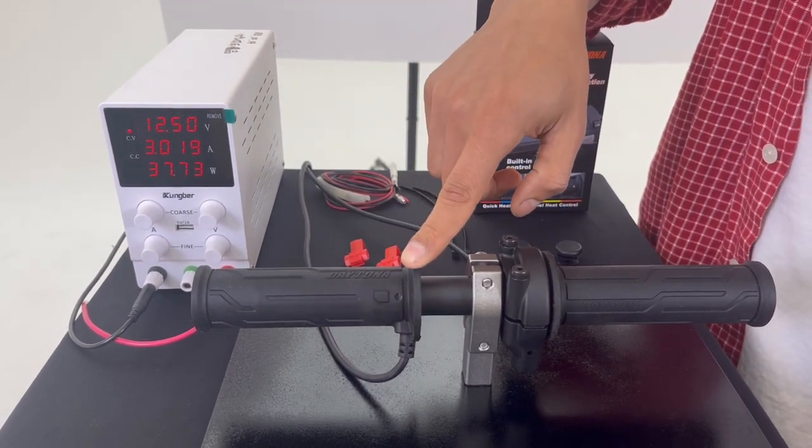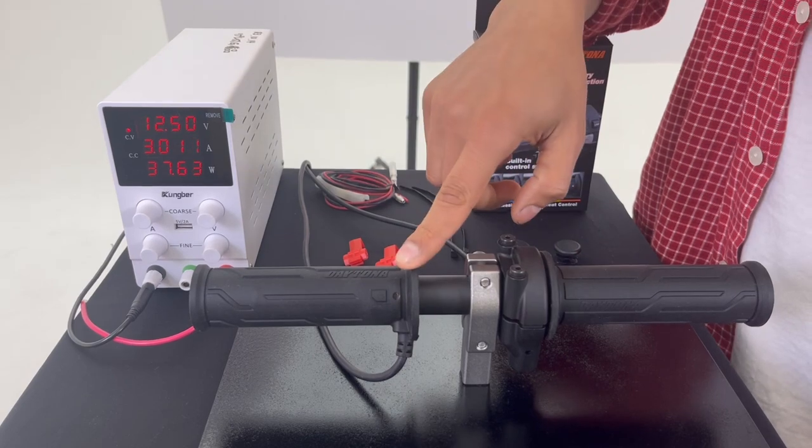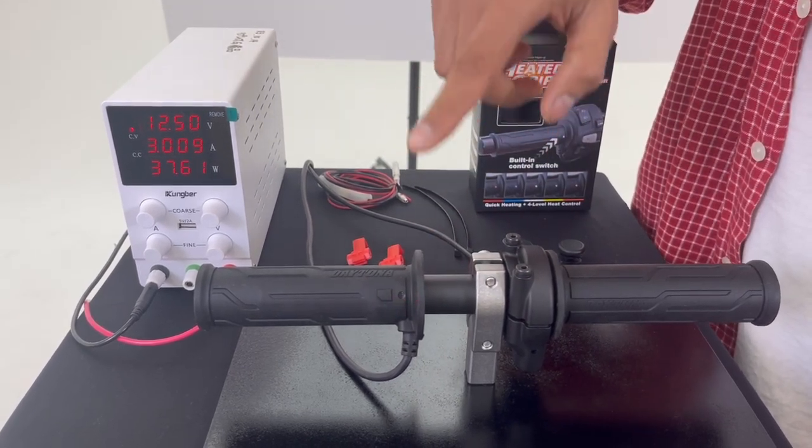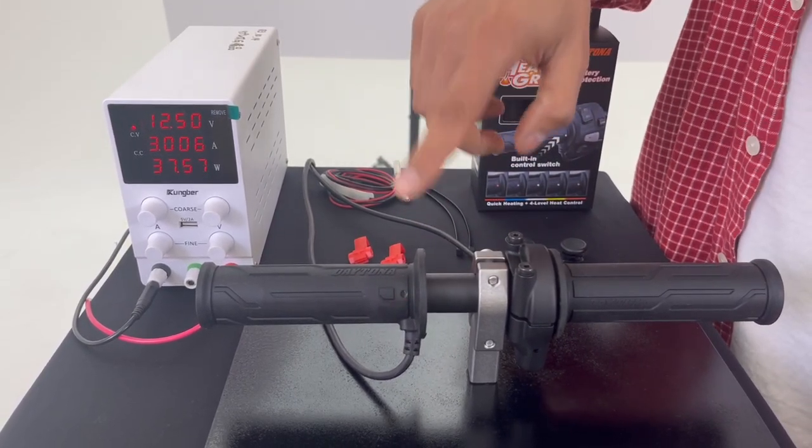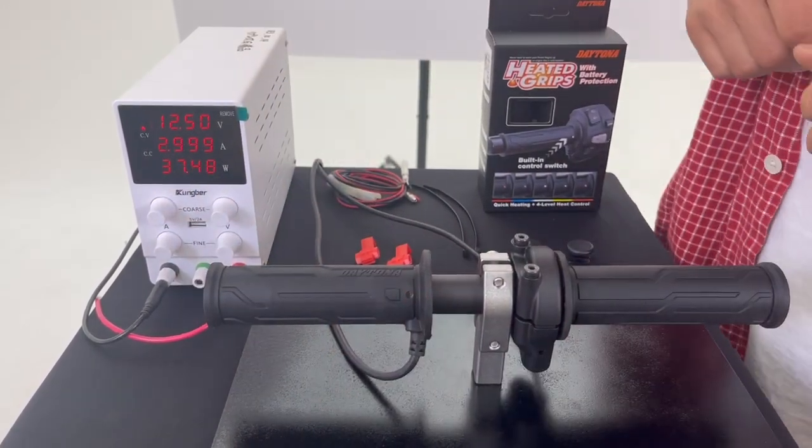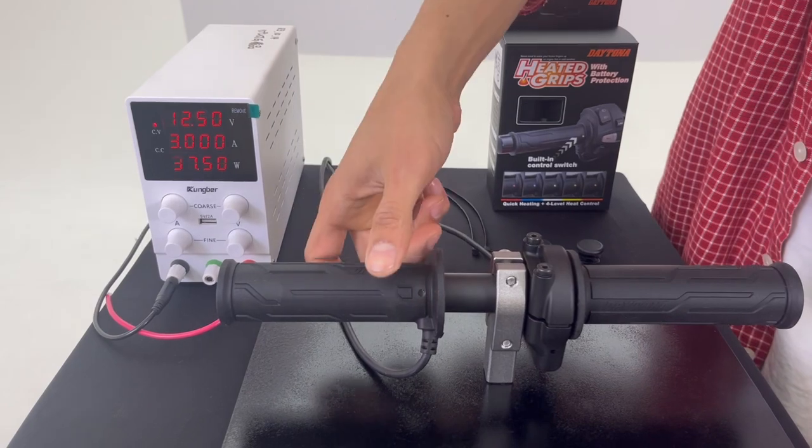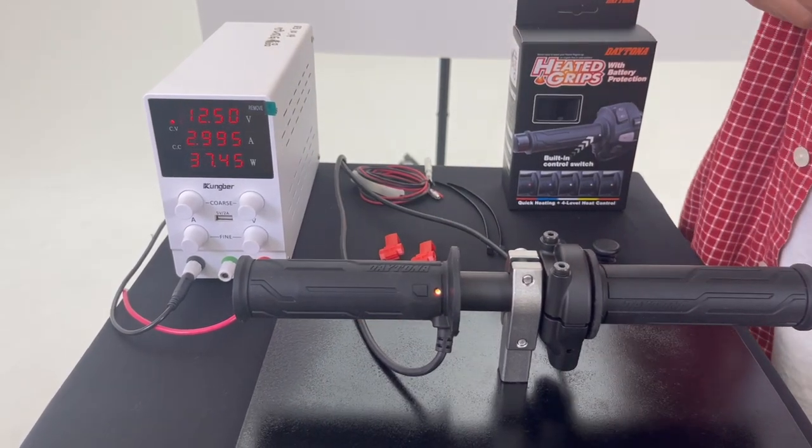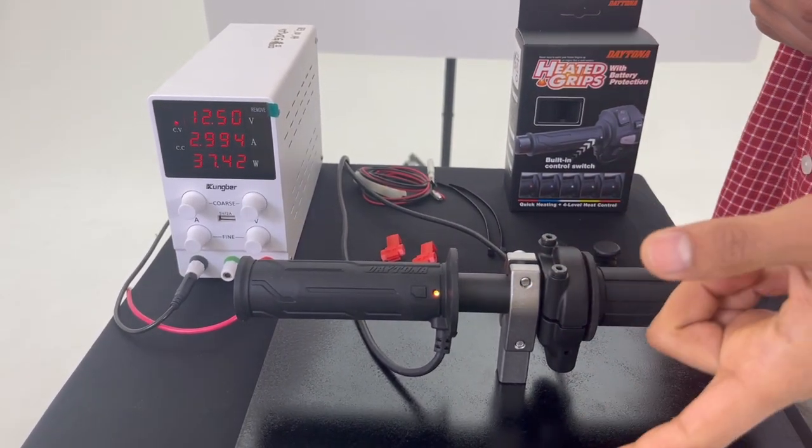Right now as you can see they are blinking red, which means they are in quick heating mode. This will continue for four minutes and they will get really hot. And if you want to cancel this mode, you can just push the button one time and it will go back to the previous level.